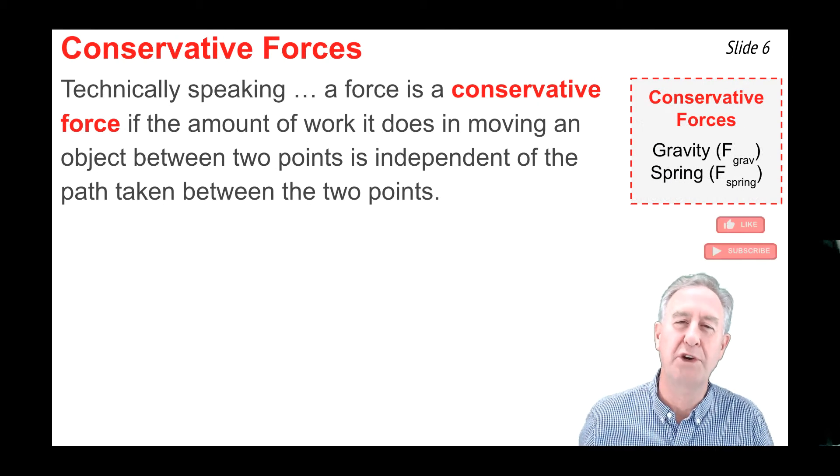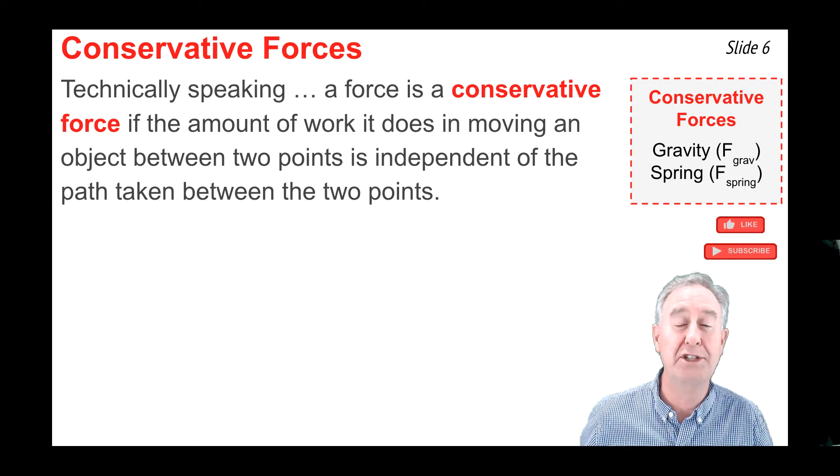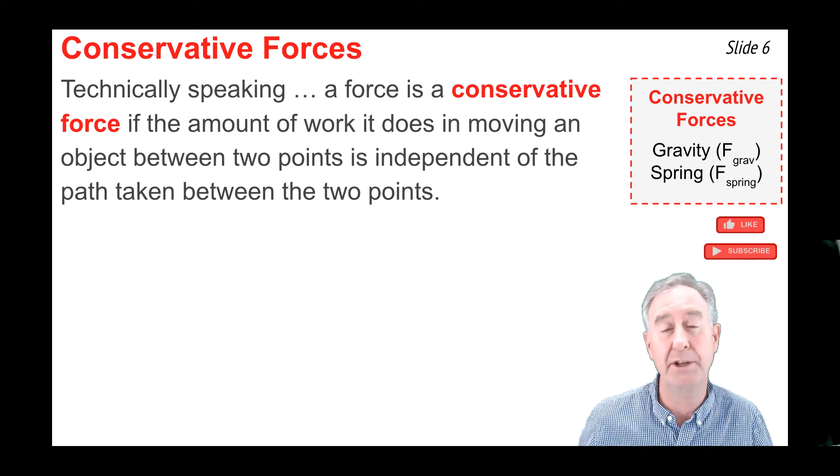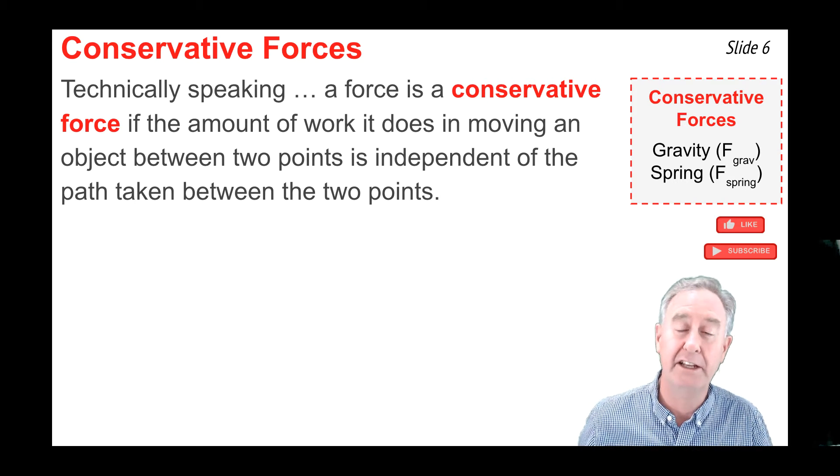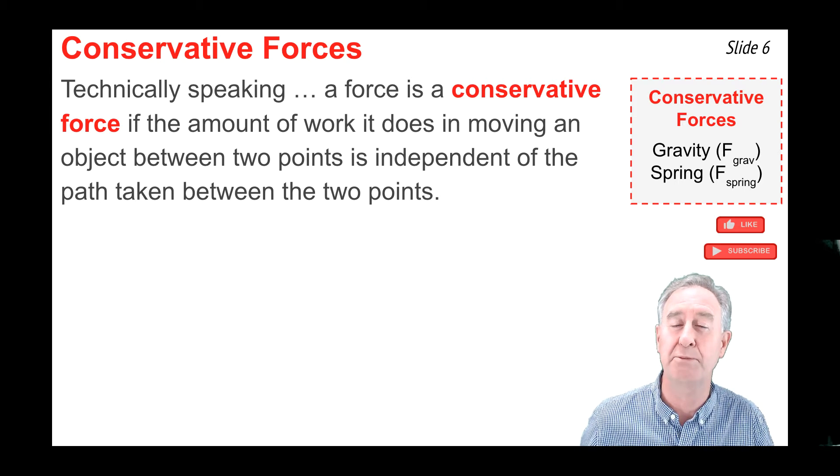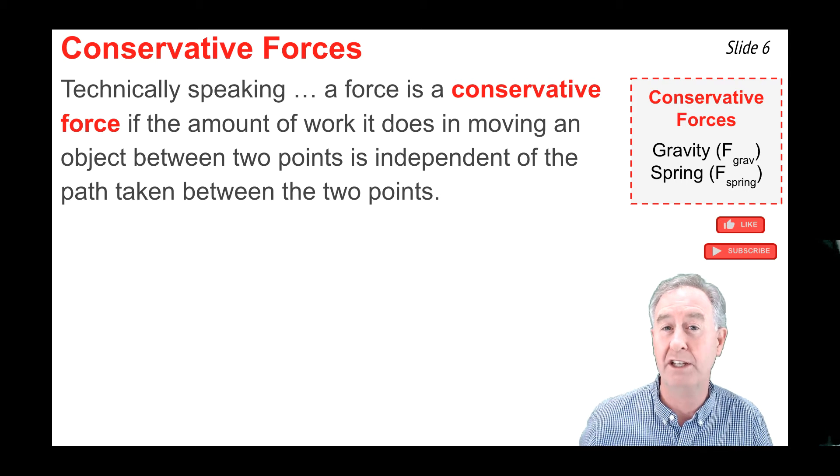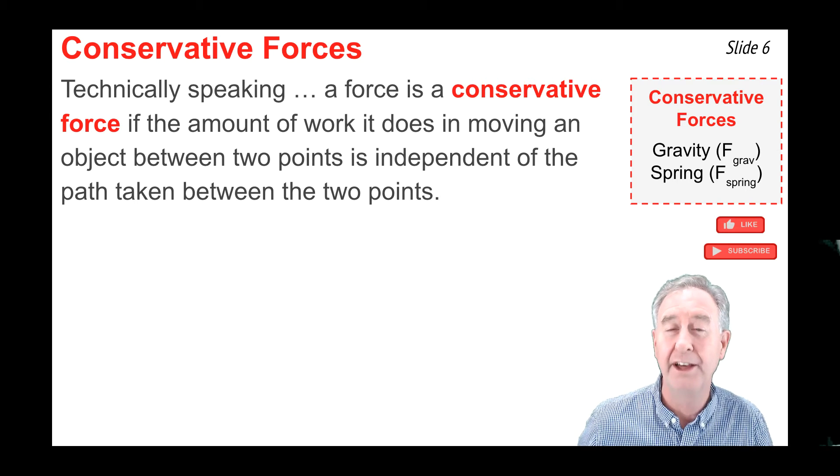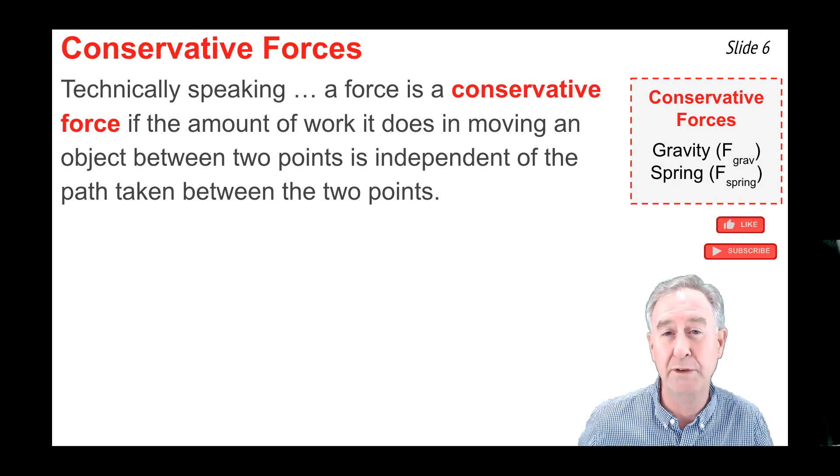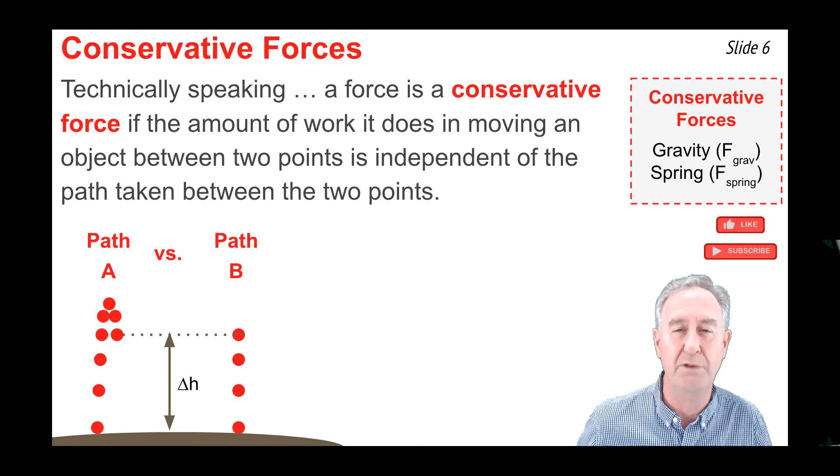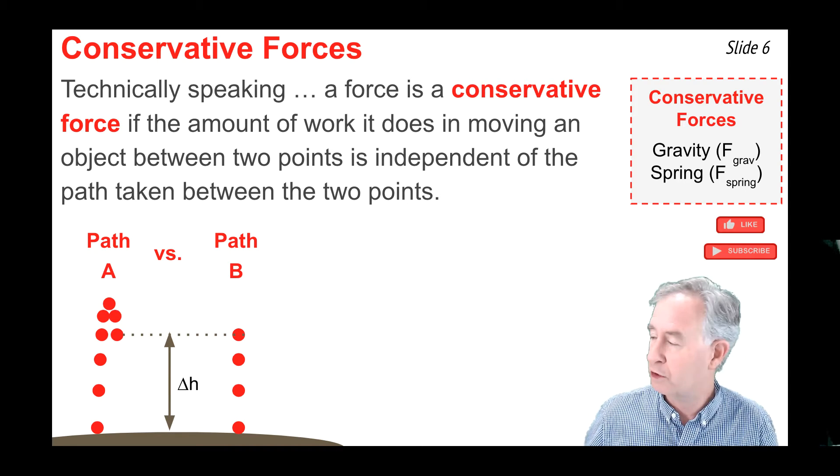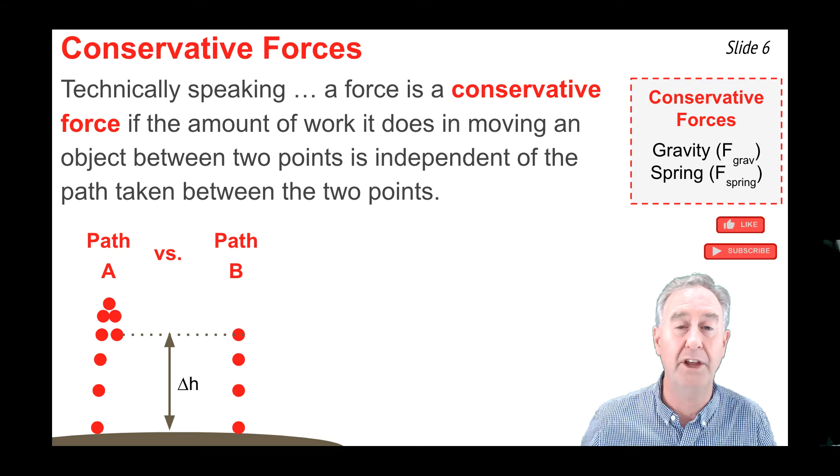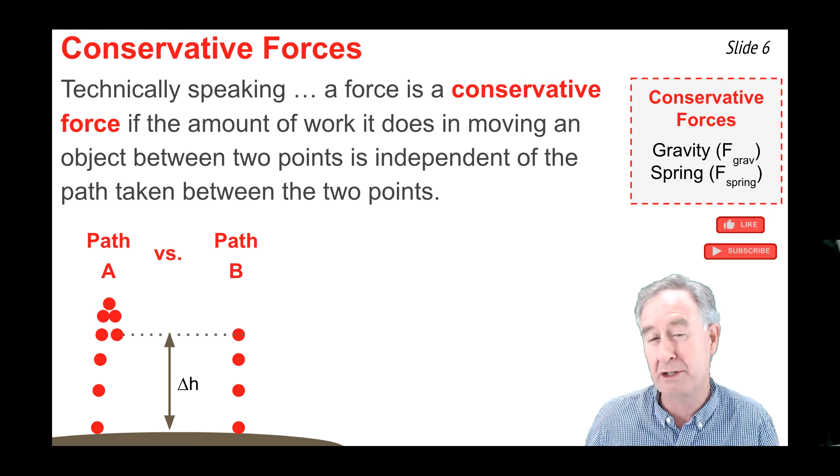When thinking about the forces that could do work upon objects, it's important to distinguish between those that are conservative and those that are non-conservative. Technically speaking, a force is a conservative force if the amount of work that it does on an object as it moves between two locations is independent of the path that the object takes between those two locations. The two classic conservative forces that we'll talk about are gravity force and spring force. Let's consider a gravity force first, using this diagram to help. There's two paths of a ball taken from the ground up to a final location 20 meters above the ground.